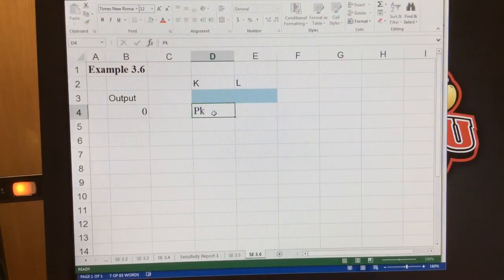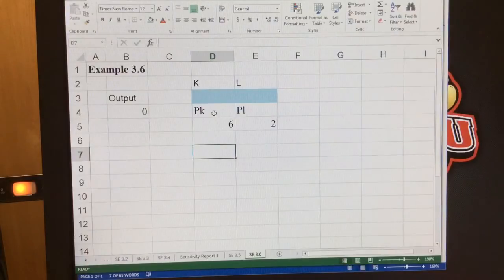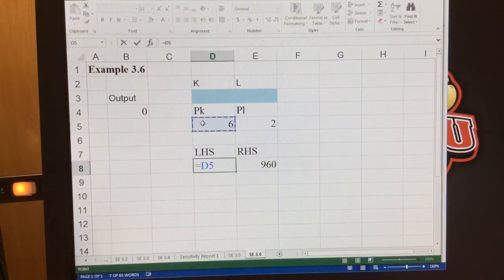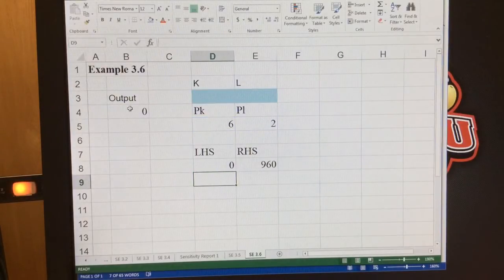Now I have the price of capital and the price of labor. The price of capital is given at 6 and the price of labor is given at 2. And so now my right-hand side constraint is 960. My left-hand side constraint is simply price of K times K plus price of L times L.